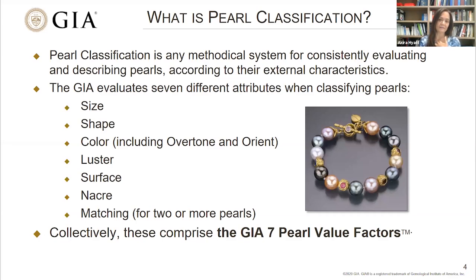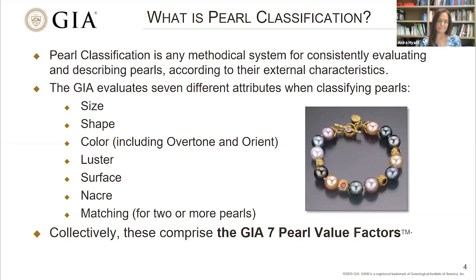Pearl classification is often likened to diamond grading, but given the complex nature of pearls, the classification tends to be a little more nuanced. For example, with pearls, color is not simply a function of presence or saturation as it is with D-to-Z diamond grading, but also hue, tone, overtone, and orient. While symmetrical pearls are typically more valuable than asymmetrical pearls, high-quality baroque pearls can command equally high prices as comparable symmetrical pearls. And luster ranges differ from one pearl type to another, so excellent luster is not the same across the board. Those are just some of the subtle differences that must be accounted for when classifying pearls, and that is precisely what the GIA seven pearl value factors system is designed to do.